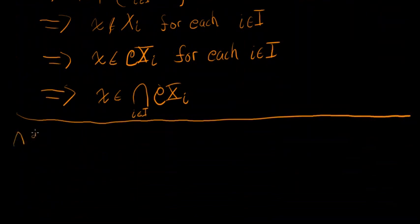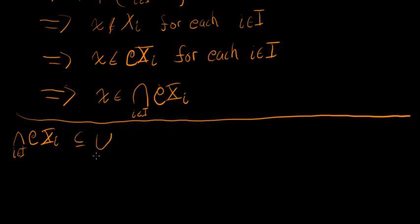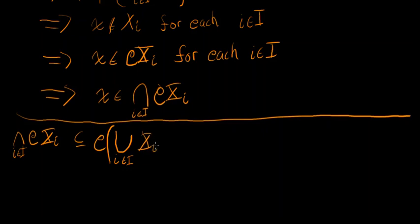Now we'll do the same thing going the other way — showing that the intersection for all i in I of the complement of Xᵢ is a subset of the complement of the union of X sub I for all i in I.